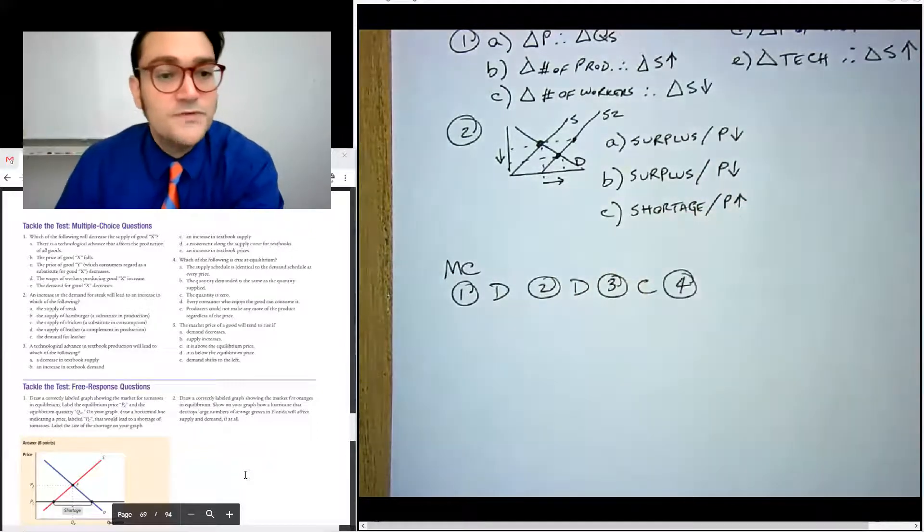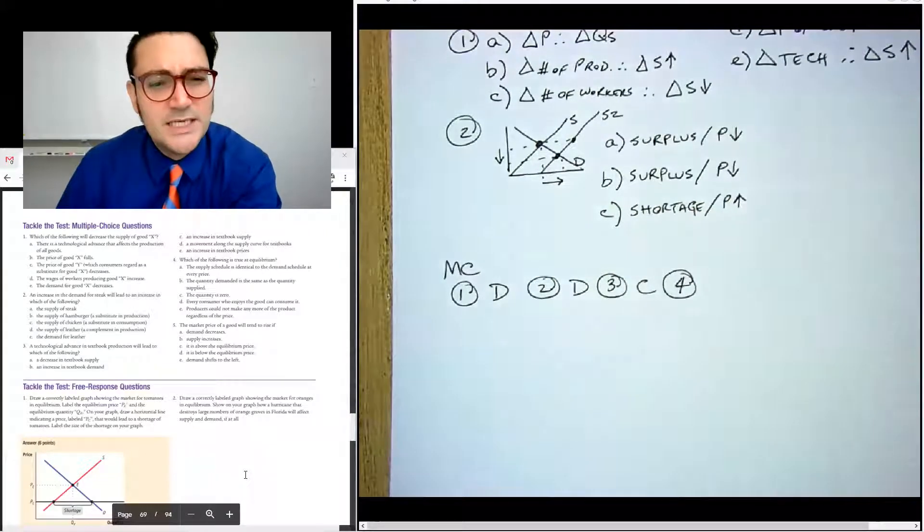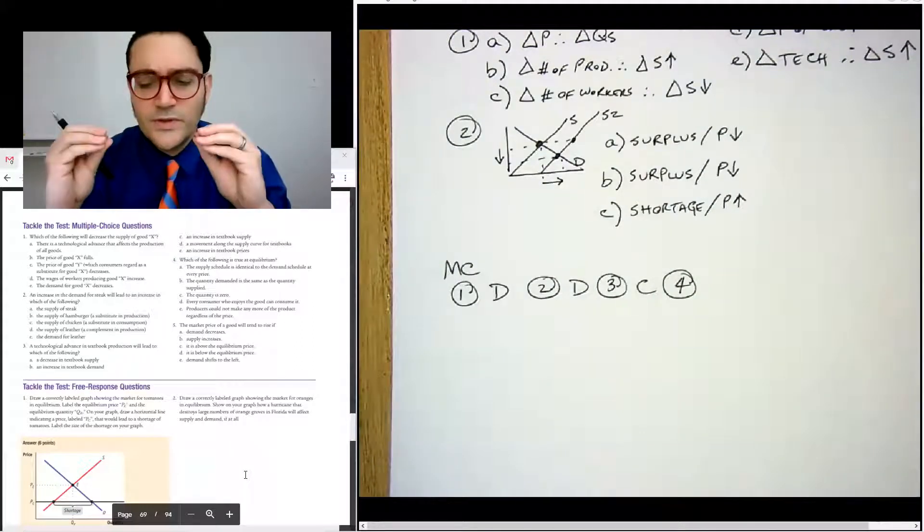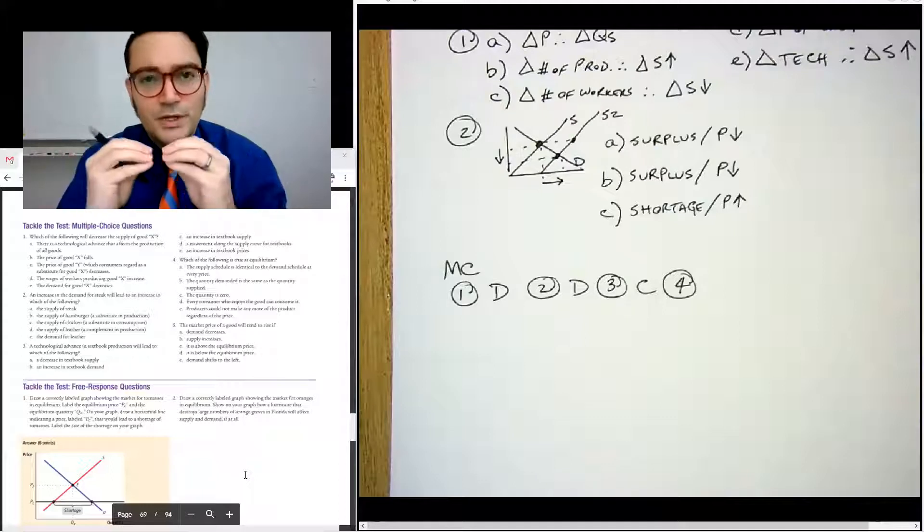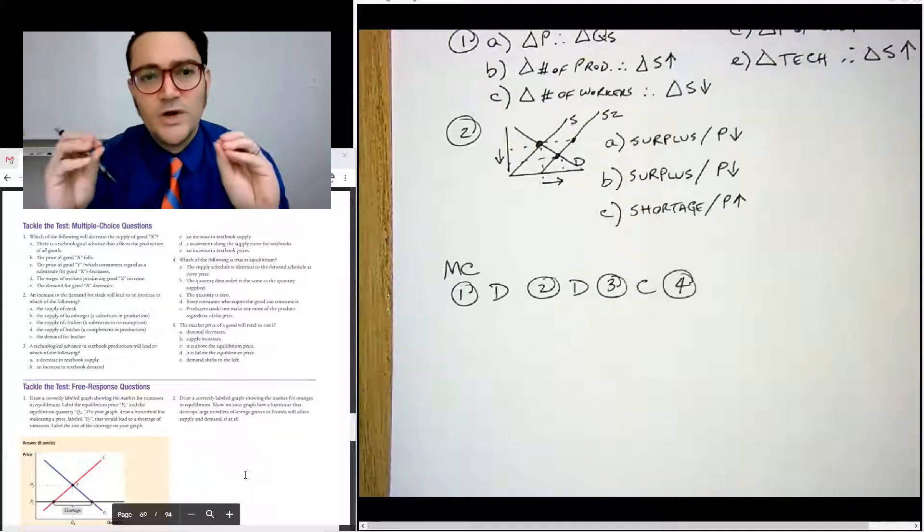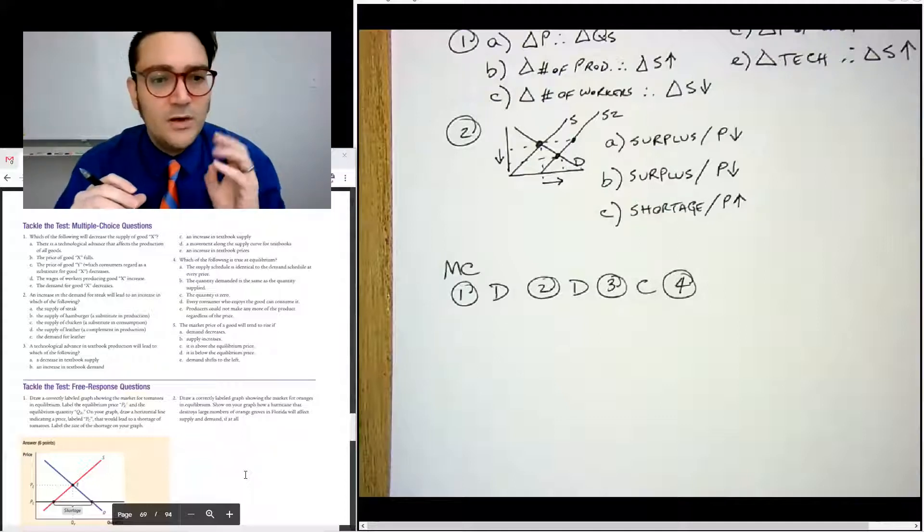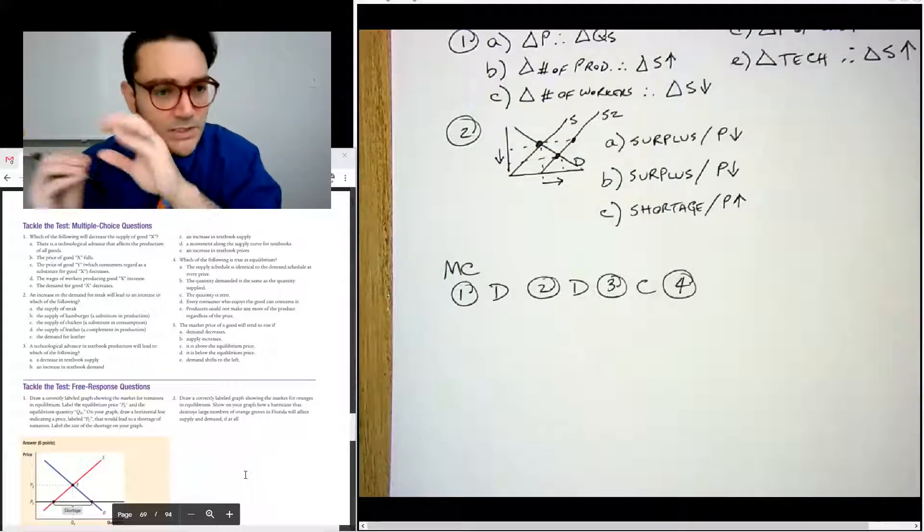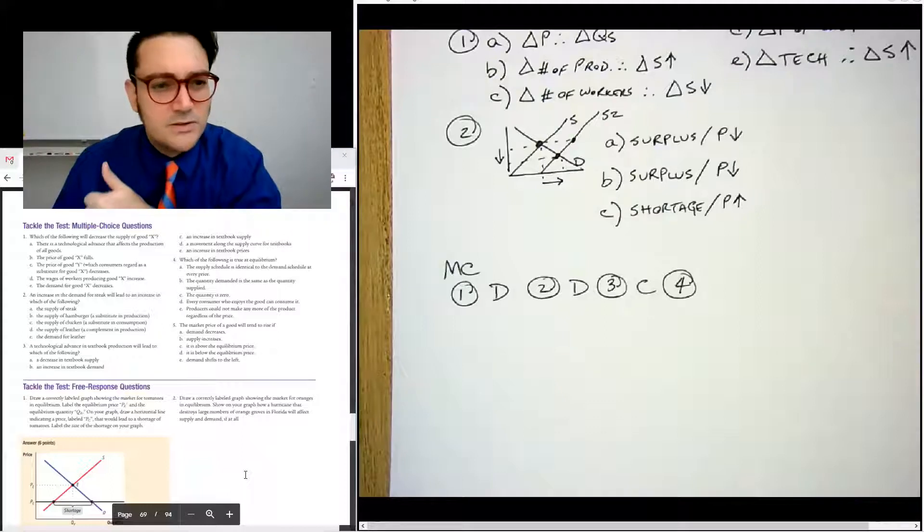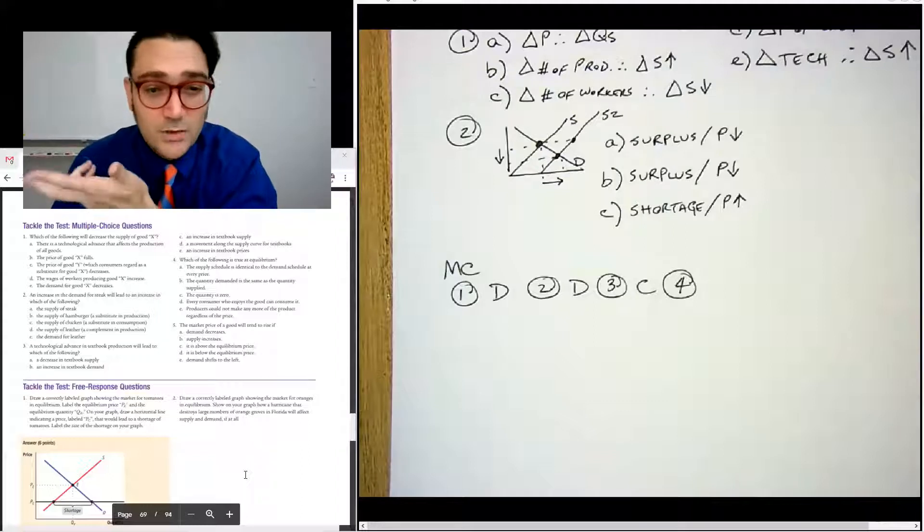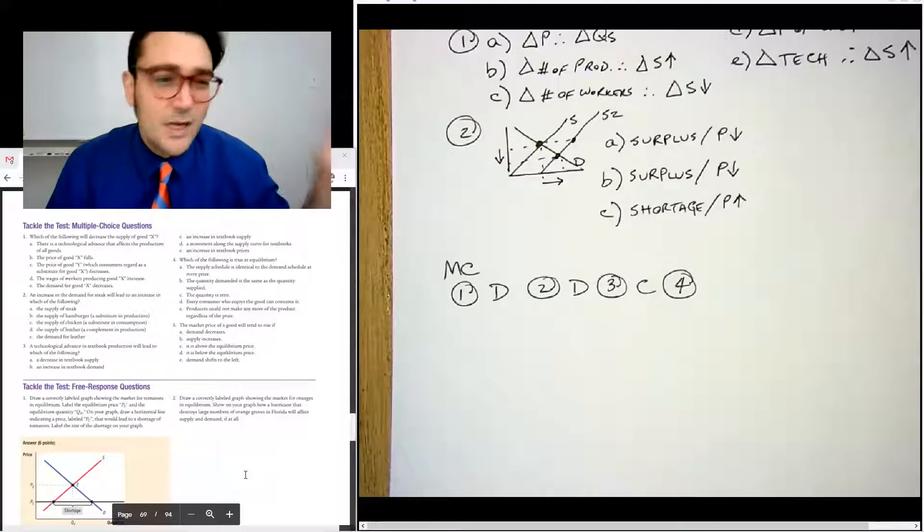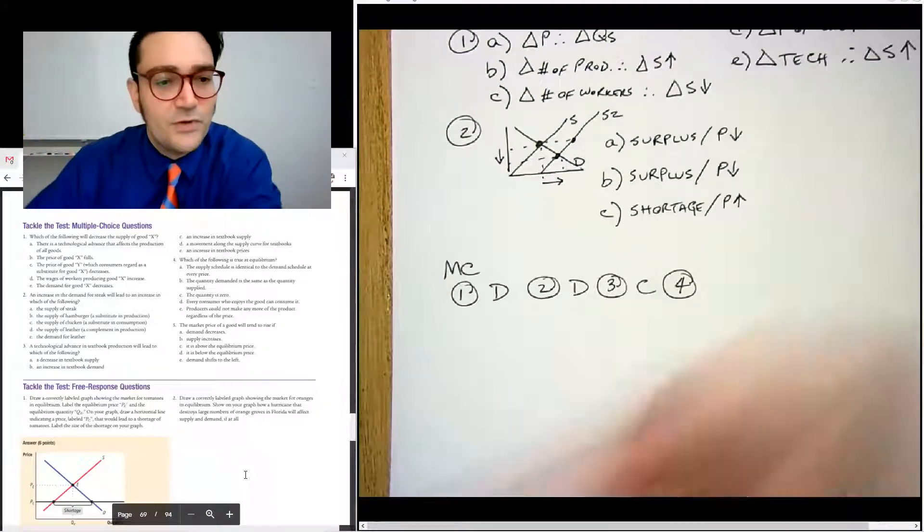Number four, which of the following is true at equilibrium. The supply schedule is identical to the demand schedule at every price. No, they're only at the, the only thing that, where the schedules would be equal would be where the market clearing prices. So they actually would only, the quantity supplied and quantity demanded would only equal each other at one price. Quantity demanded is the same as the quantity supplied. That is true at equilibrium. Yeah. So let's say B for that one. The quantity is zero. No, not necessarily. Every consumer who enjoys it can consume it. No, because some people aren't willing to pay the highest price for it. Producers could not make any more of the product regardless. No, because they have their supply curve. So the correct answer for this one is B.